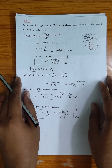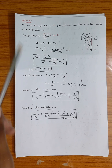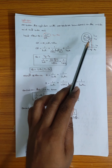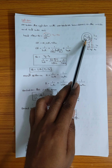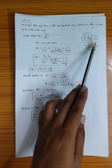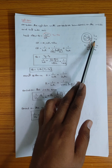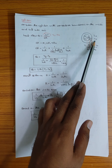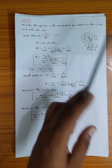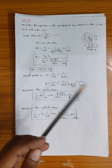Now considering the cylindrical object: take a cylinder with convective boundaries on the inside and outside. Inside has temperature Ti and convective heat transfer coefficient Hi; outside has temperature T0 and convective heat transfer coefficient H0.